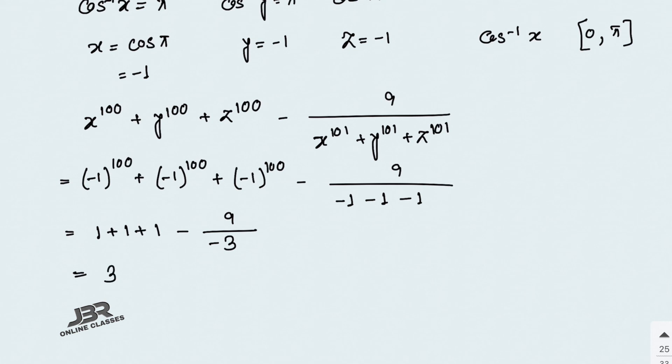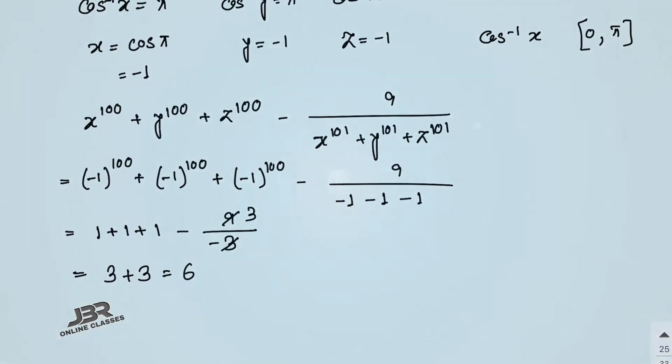Substituting x = y = z = −1: x¹⁰⁰ + y¹⁰⁰ + z¹⁰⁰ = (−1)¹⁰⁰ + (−1)¹⁰⁰ + (−1)¹⁰⁰ = 1 + 1 + 1 = 3, and x¹⁰¹ + y¹⁰¹ + z¹⁰¹ = −1 − 1 − 1 = −3. So the expression becomes 3 − 9/(−3) = 3 + 3 = 6. That is your answer.